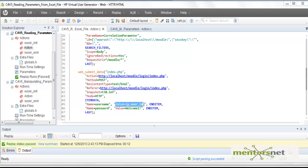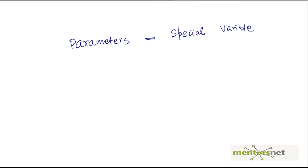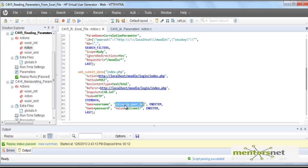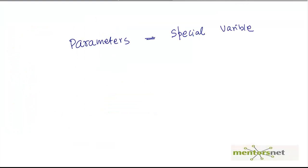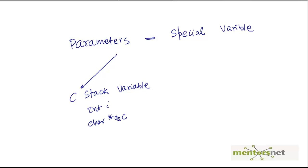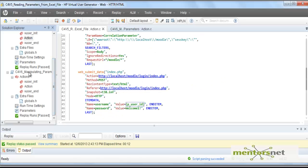Hello, welcome back. In the last couple of videos we were discussing parameterization in Virtual User Generator script. Parameters are a special kind of variable. Instead of programmatically declaring a variable, we created a variable using a couple of clicks. In this video, let's try to manipulate parameters programmatically. Basically there are two kinds of things: a C-style variable like int i or char* abc, and also a parameter where you give just a name with a quote, like prm1. Both abc and prm1 will store a string.